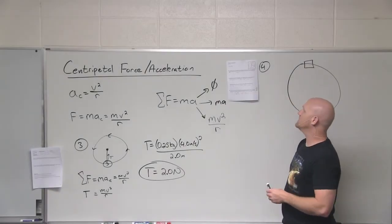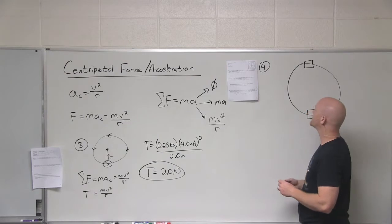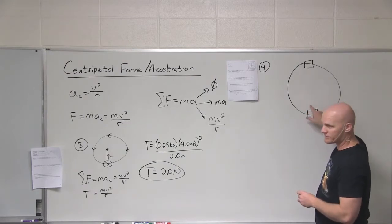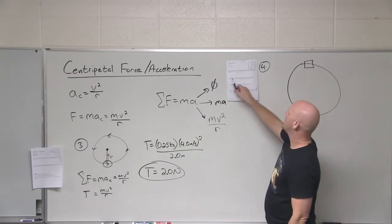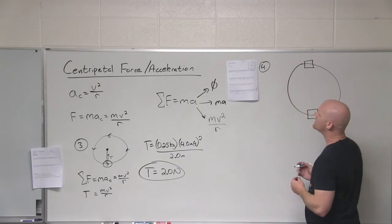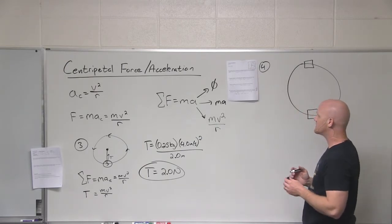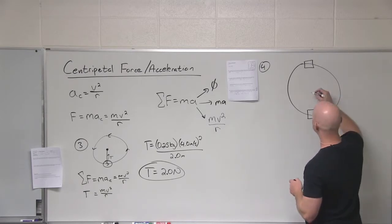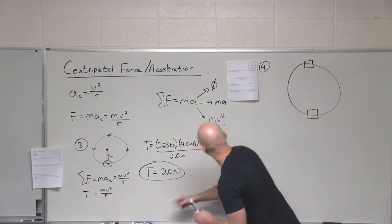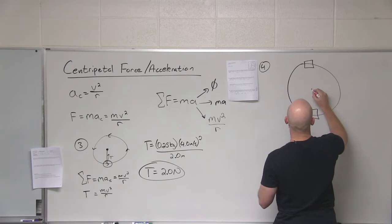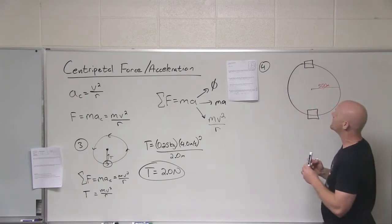Alright, number four deals with an airplane. Since I have very little ability, my airplane looks like a box. So an airplane is traveling with a speed of 150 meters per second and it completes a loop-de-loop with a radius of 500 meters.